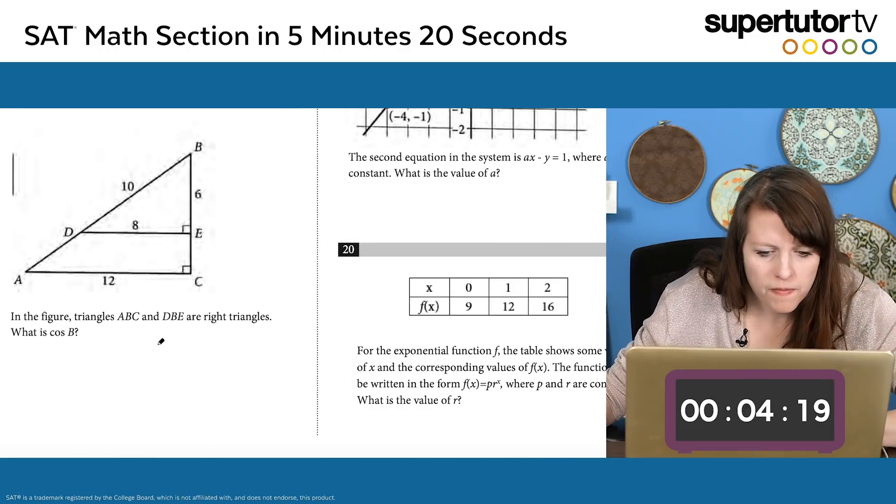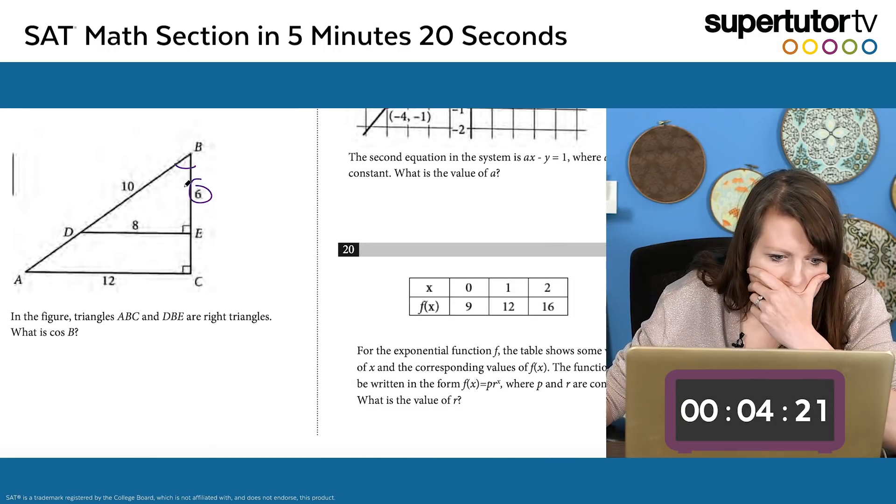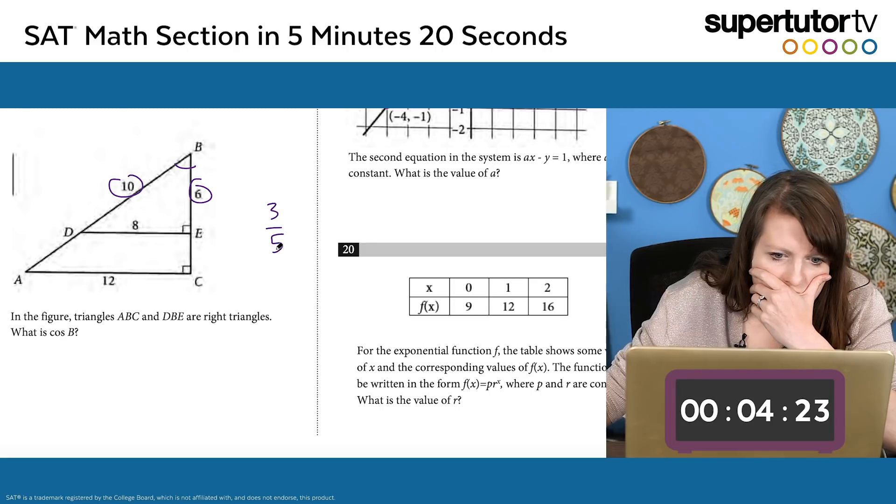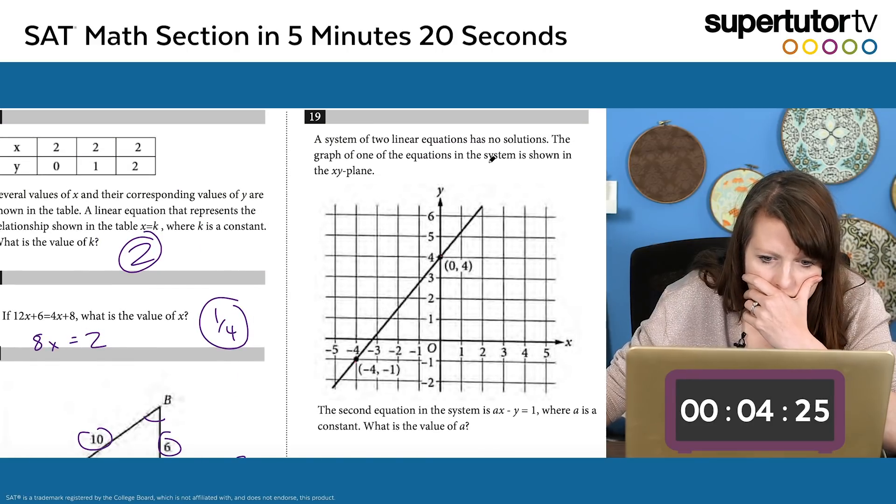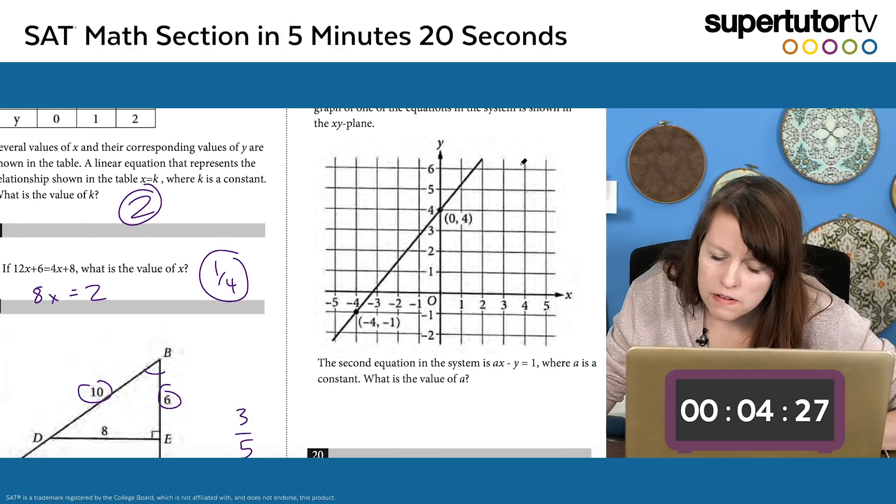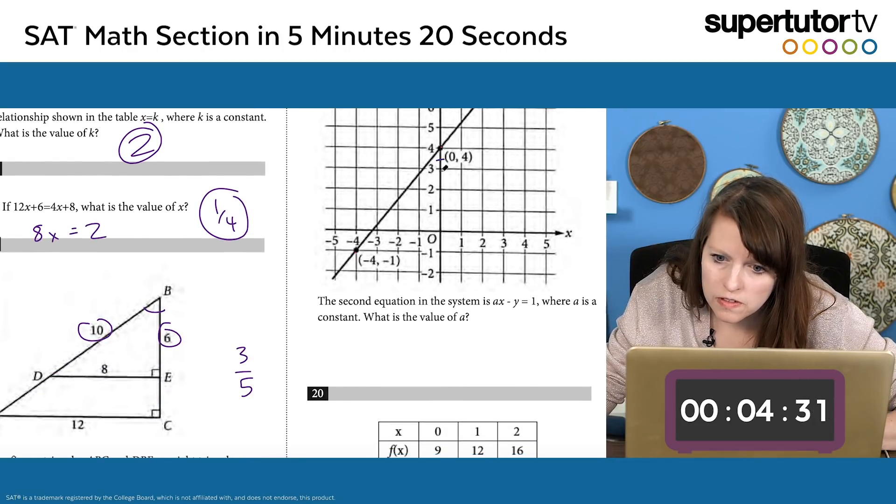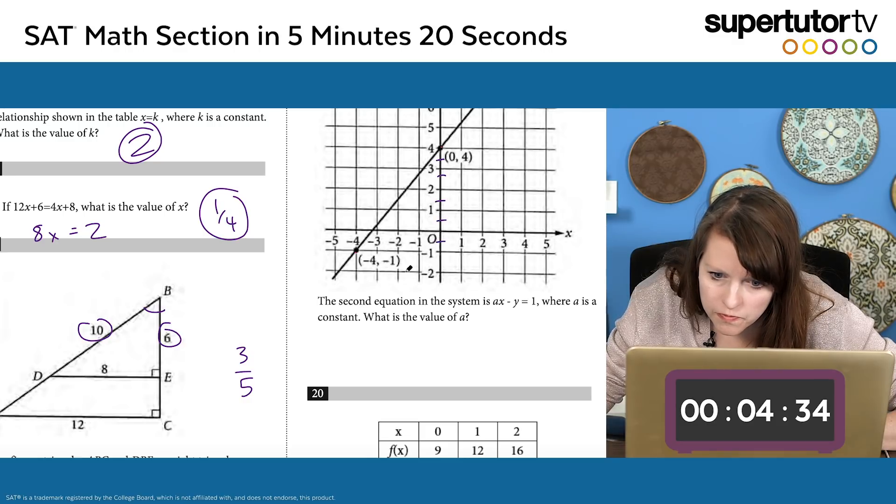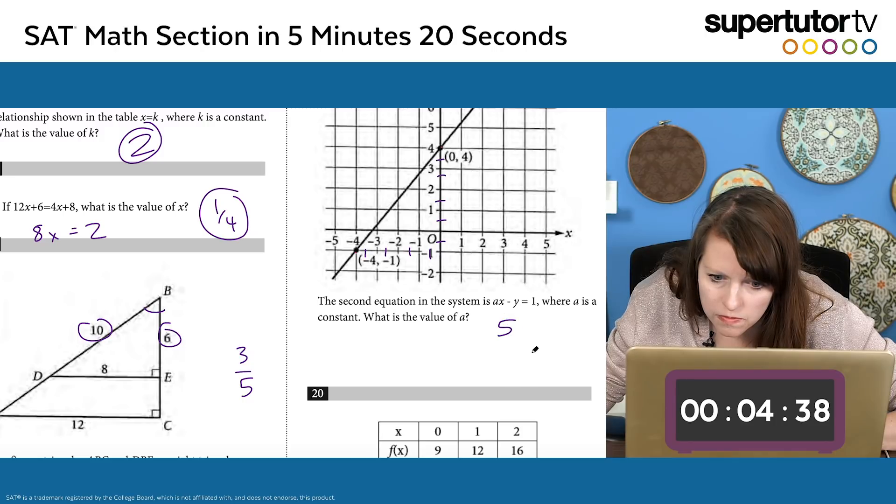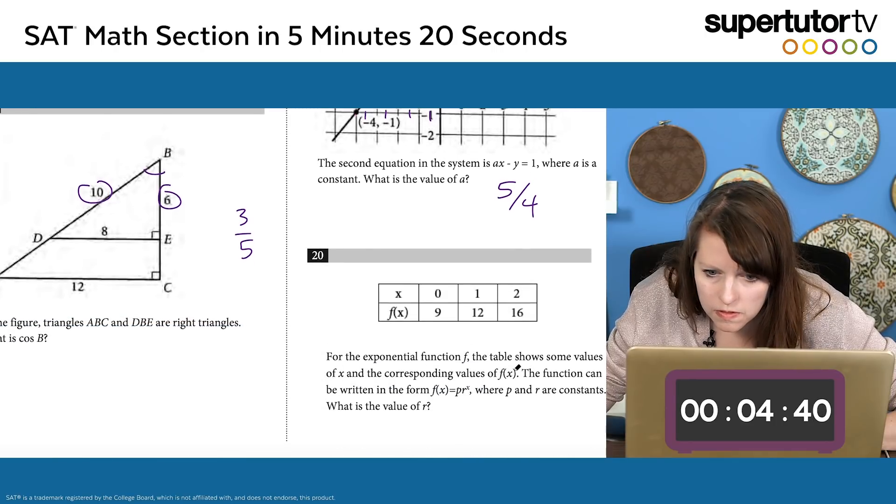Okay, here I have cosine b. That's adjacent over hypotenuse. 6 over 10 is 3 over 5, done. Whew. System of linear equations has no solution. That means they're parallel lines. So let's look for the slope of this line. Slope of this line is going to be 1, 2, 3, 4, 5. And I'm checking, you have to be really careful on these that it's not like by twos, that it's counting by ones. And it is counted by ones, so it's 5 over 4. It's positive slope. I can see that because it's upward slipping.